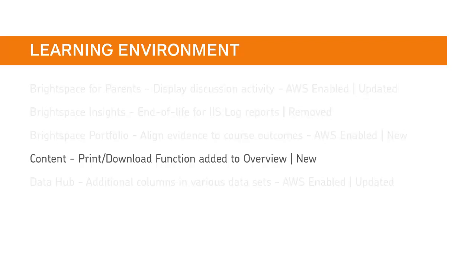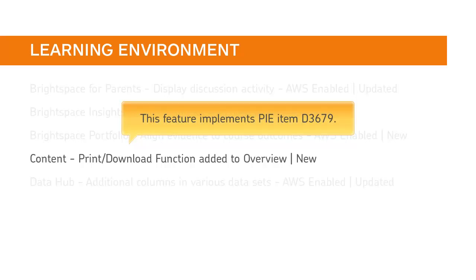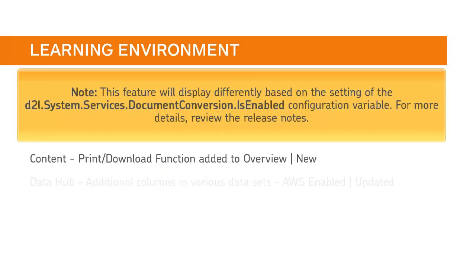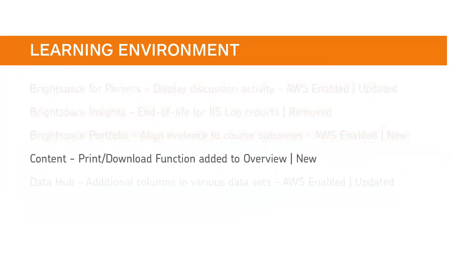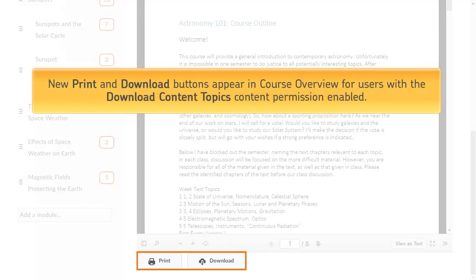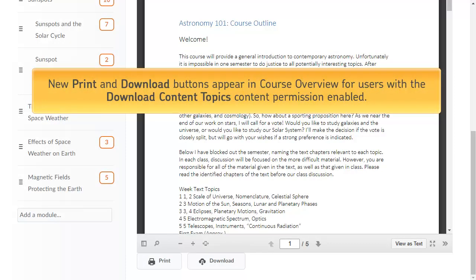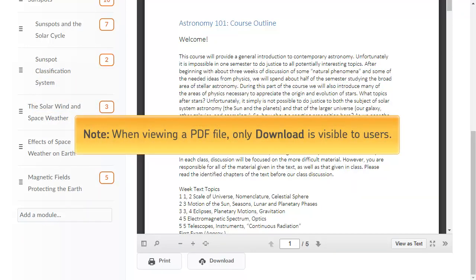Users can now print and download an uploaded syllabus from course overview. This feature implements PI Item D3679. Note: this feature will display differently based on the settings of the D2L System Services Document Conversion Is Enabled configuration variable. For more details, review the release notes. New print and download buttons appear in course overview for users with the download content topics content permission enabled. When viewing a PDF file, only download is visible to users.